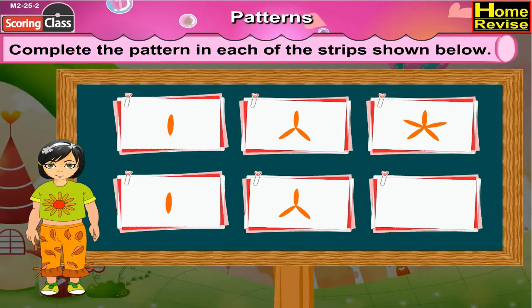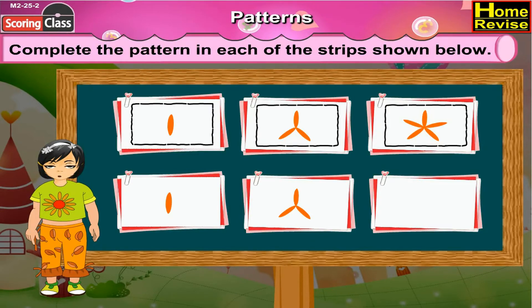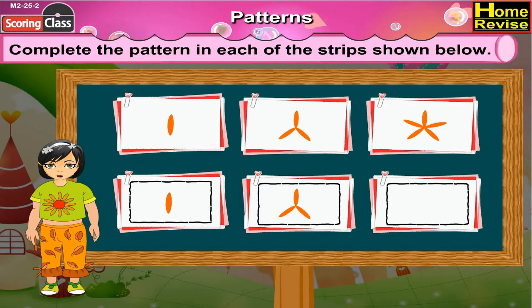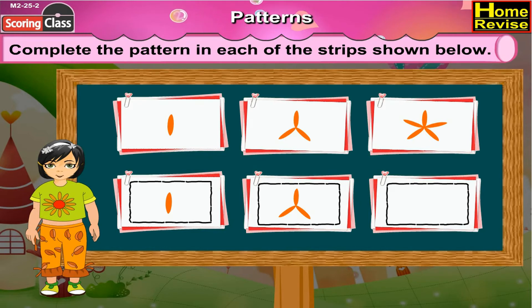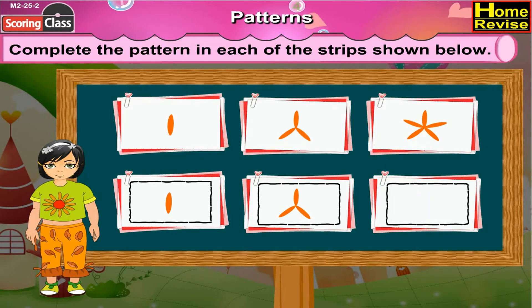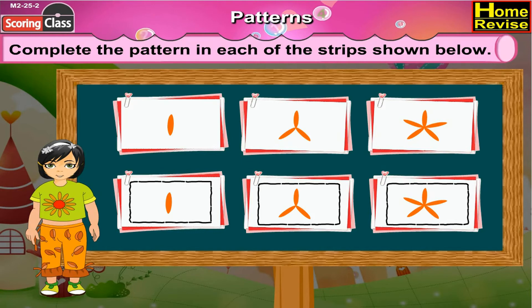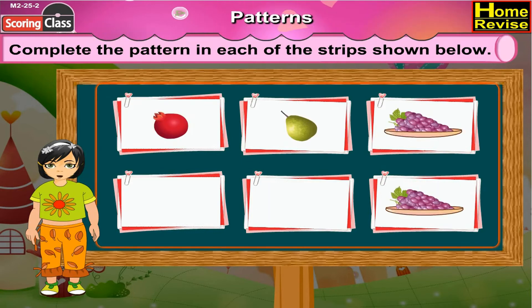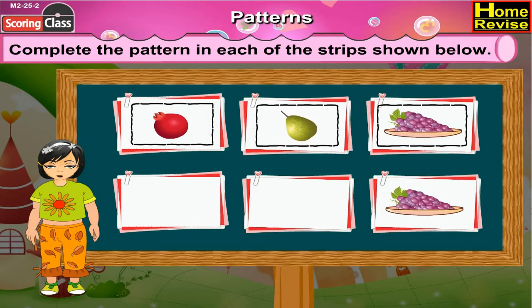Complete the pattern in each of the strips shown below. Here is the first pattern strip. First we will see the first three boxes. Did you notice the pattern? Now in the next three boxes, the first two boxes are filled with the pattern just like the previous first two boxes, but the third box is empty. So here we will draw the pattern as shown in the previous third box.